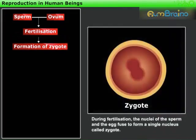During fertilization, the nuclei of the sperm and the egg fuse to form a single nucleus called zygote. Then the zygote begins to develop into an embryo.